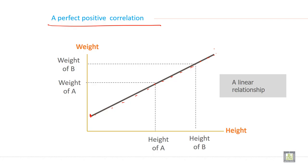In perfect positive correlation, the coefficient of correlation will be exactly one. This is called perfect positive correlation.